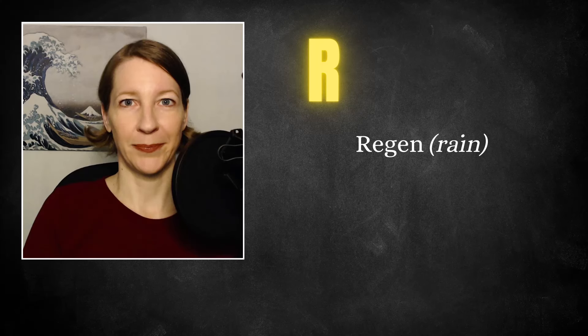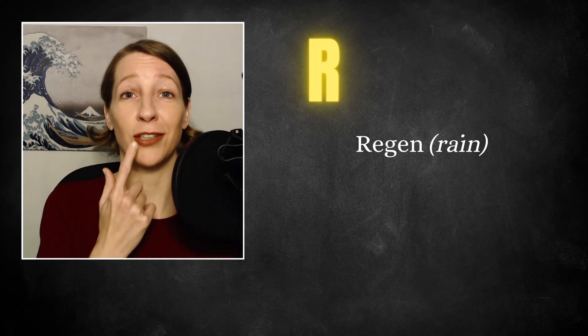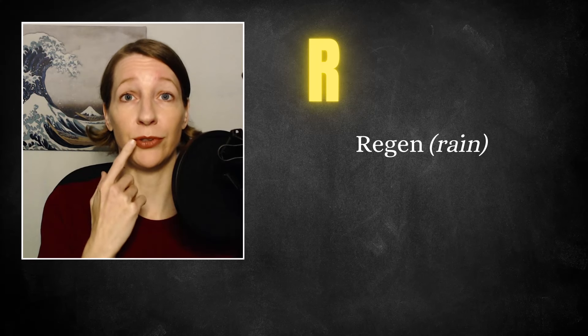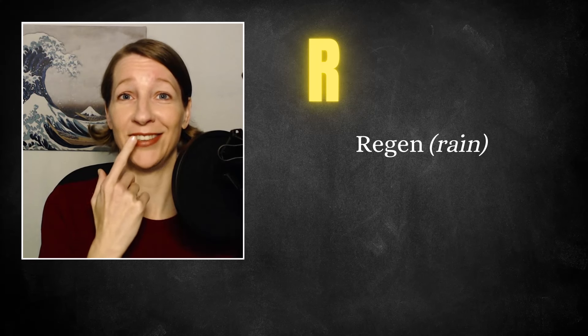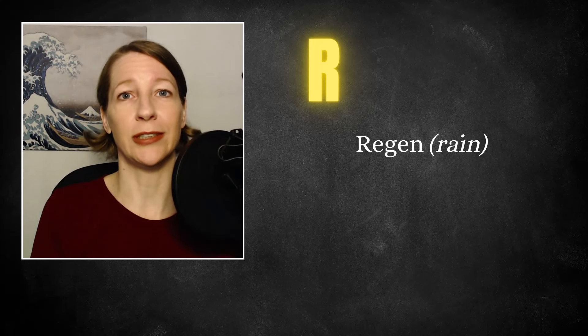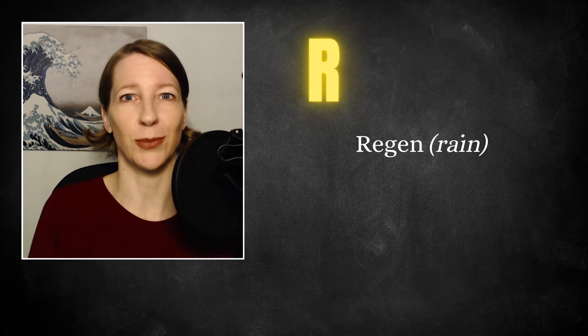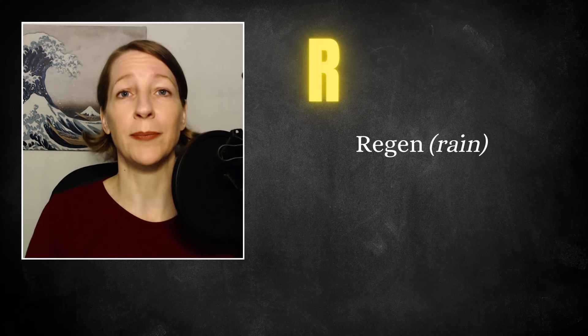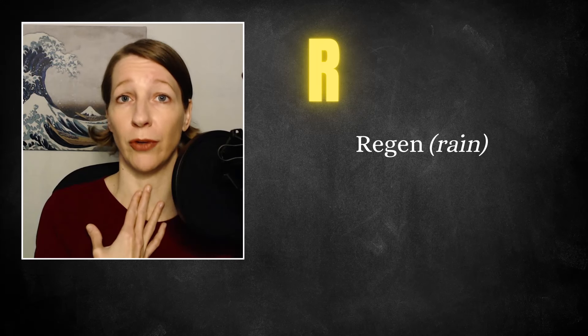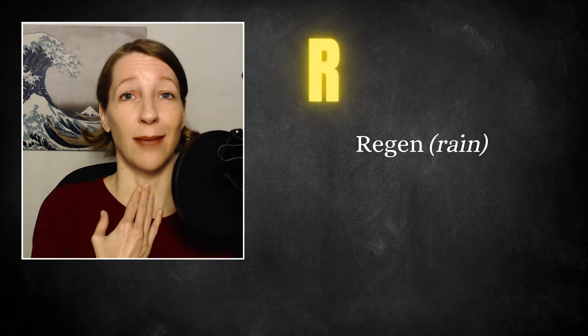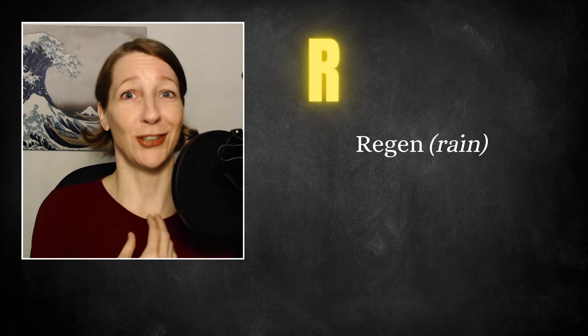R. Regen. Now the German R is produced back here, not in the front of your mouth. But if you speak a language that uses the rolled R that you can produce with your tongue and your teeth, then you can use that. There are several regions in Germany where people actually use that rolled R and they also use it in Austria and I think in Switzerland as well. So you can use that if that is the R that you're used to, if you find it too hard to produce it from here.